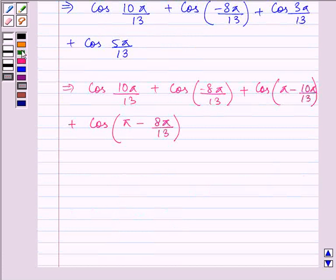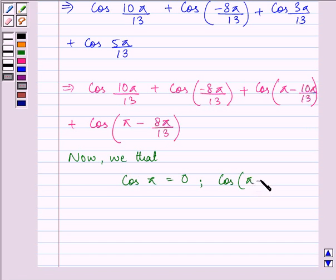Now, we know that cos π is equal to 0, right? So cos π is 0 and cos(π - x) gives us minus cos x. Also, cos(-x) is equal to cos x itself.